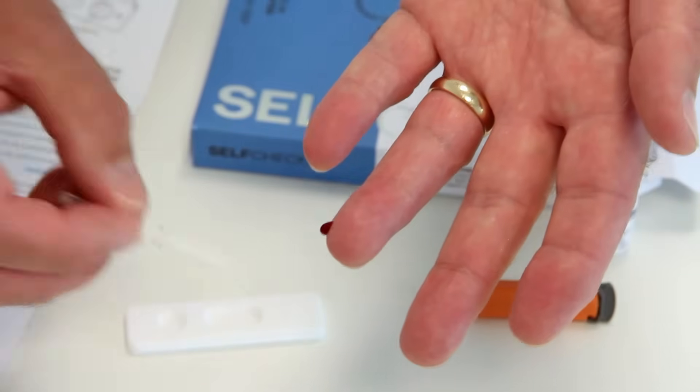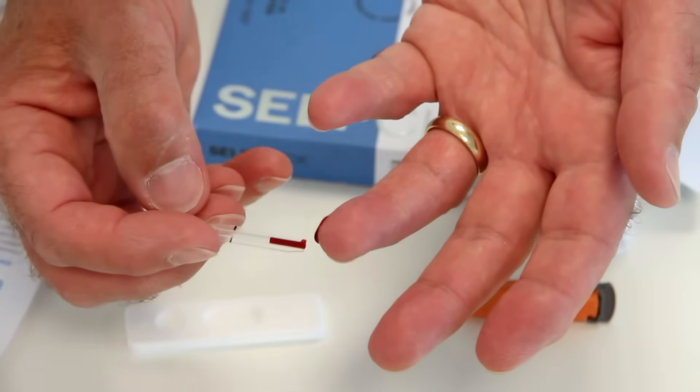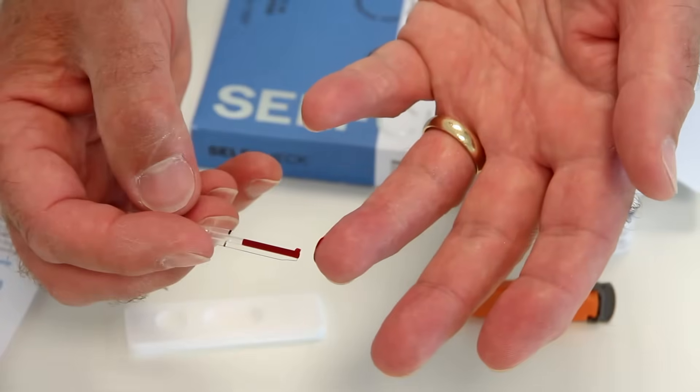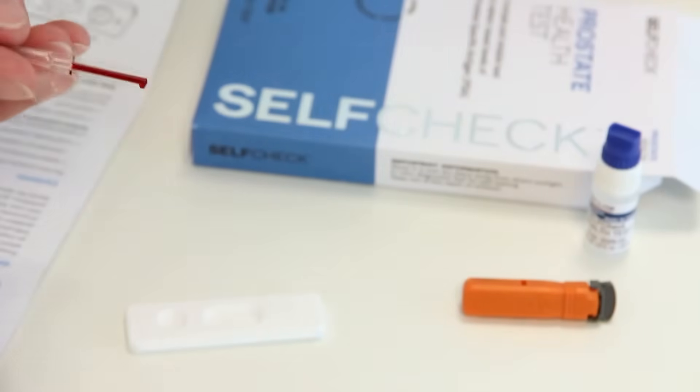Squeeze your finger gently to obtain a large drop of blood, then touch the end of the plastic pipette to the blood drop. Blood will flow automatically into the pipette. There is no need to squeeze the pipette bulb. Continue collecting blood drops until the pipette is filled to the black line.